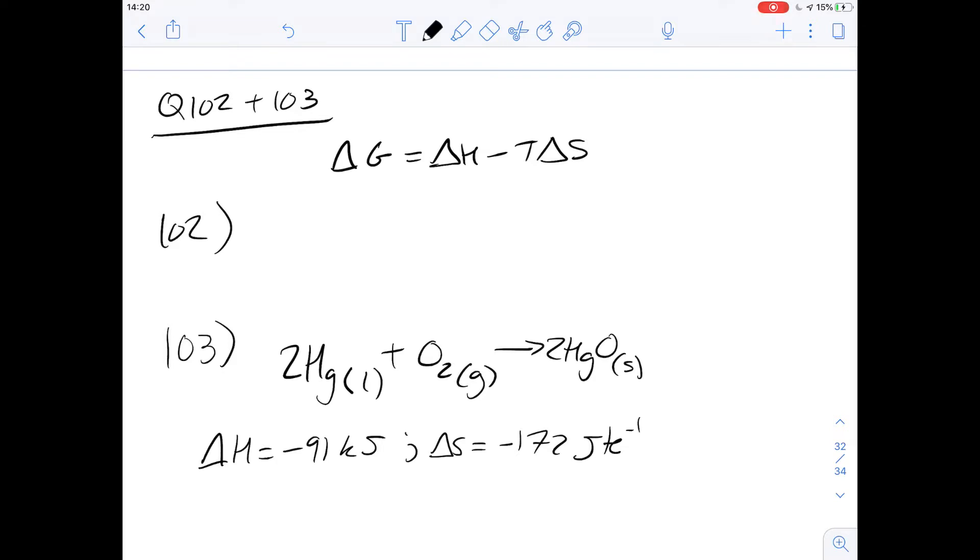This is a question about Gibbs free energy and enthalpy and entropy changes. Question 102 says, for the change that occurs when steam condenses, what sort of changes are happening with enthalpy and entropy?